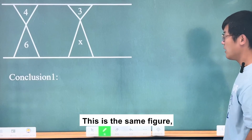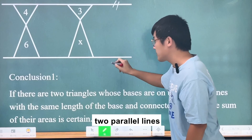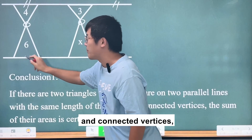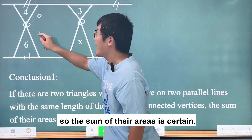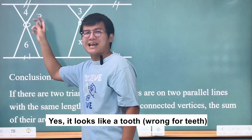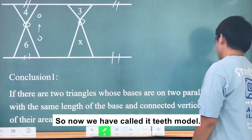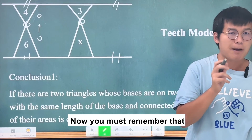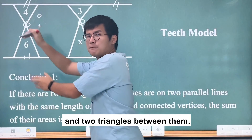Let's make a conclusion. If there are two triangles whose bases lie on two parallel lines, with the same base lengths and connected to a shared interior point, the sum of their areas is constant. This shape looks like a letter — we call it the tease model. Remember: next time you find two parallel lines and two triangles between them, try using the tease model.